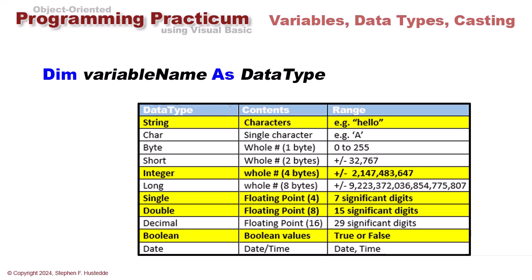A char data type or character data type contains a single character. We usually use single quotes to denote those, so a capital A or lowercase B could be a char data type. A byte is a whole number ranging from 0 to 255. A short is a little bit larger whole number that ranges in value from plus or minus 32,767.